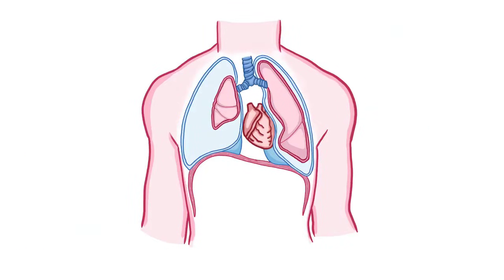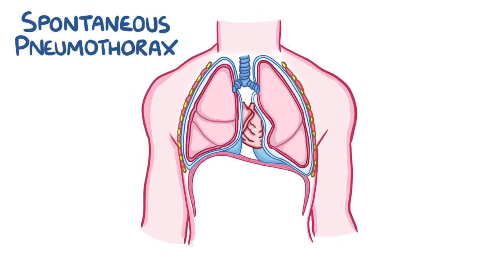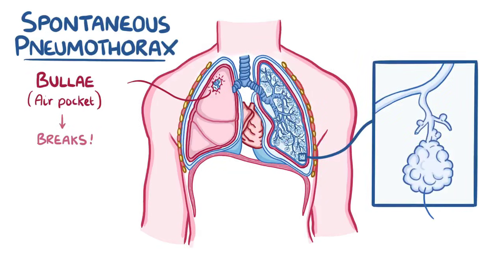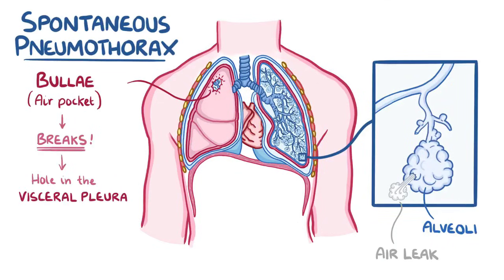There are many types of pneumothorax. The first is spontaneous pneumothorax, which typically occurs when a bulla — a large air pocket — forms on the surface of the lung and breaks. Bullae form when the alveoli, the terminal ends of the lungs where gas exchange occurs, develop a tiny leak and air slowly seeps into the surrounding lung tissue. If the bulla breaks, it creates a large hole in the visceral pleura and air can go from the airway directly into the pleural space.